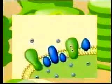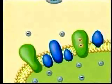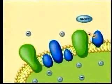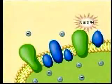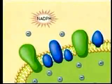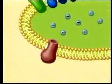The light-dependent reactions of photosynthesis take place in the thylakoids. Light energy powers the formation of two types of high-energy compounds: NADPH and ATP.